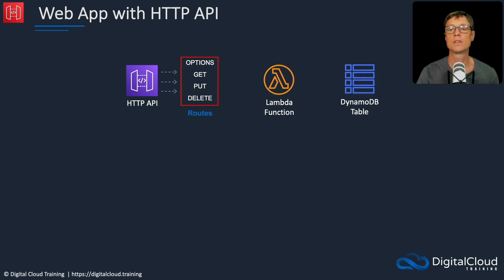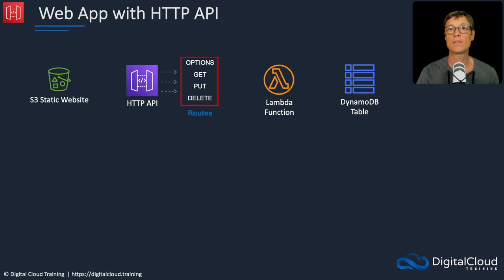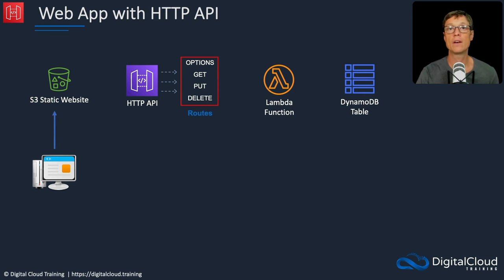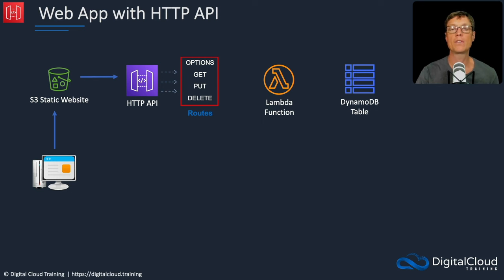We'll then have a Lambda function and a DynamoDB table. And in front of all of this, we'll have an Amazon S3 static website. So we're going to connect from our machines using a web browser to the static website, and it's going to have some client-side code running. It's going to have a form in which we can enter information and submit it to the API. The website will then talk to the public endpoint of the HTTP API, and via the API, it will be integrated with the Lambda function and then the DynamoDB table.